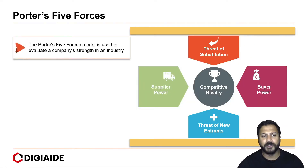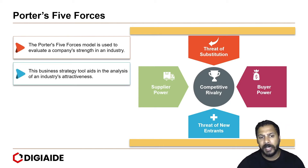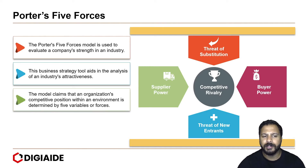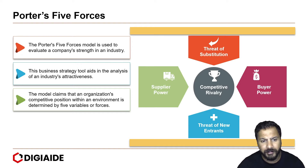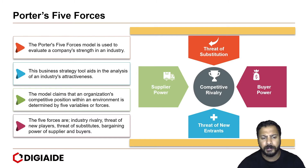The Porter's 5-Force Model is used to evaluate a company's strength in the industry. This business strategy tool aids in the analysis of an industry's attractiveness. The model claims that an organization's competitive position within an environment is determined by five forces, which are: Industry Rivalry, Threat of New Players, Threat of Substitutes in the Market, and Bargaining Power of Buyers and Suppliers.